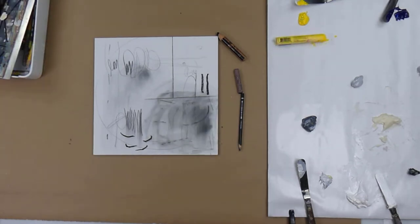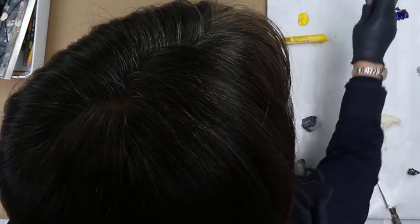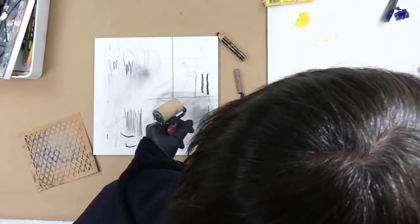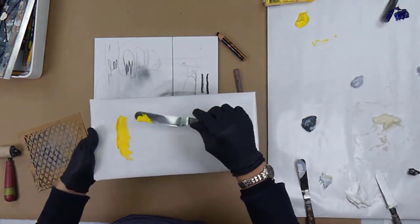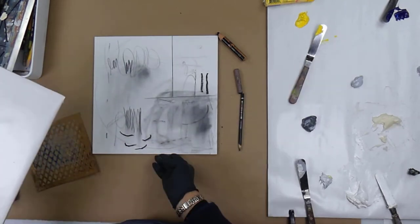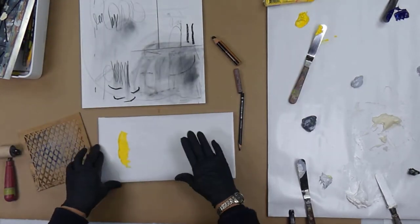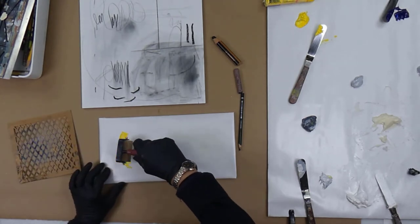I can take my brayer and the first thing you want to do is charge your brayer. That just means that you take a little bit of paint. I have this little separate palette here so I can show you underneath the camera. If I put some yellow paint here, charging your brayer just means that you're going to roll your brayer through the paint.